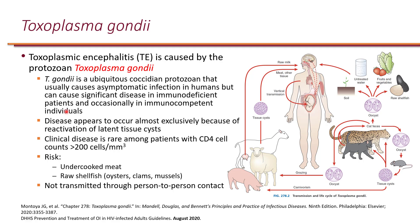Turning to Toxoplasma gondii: toxoplasmic encephalitis, or TE, is caused by Toxoplasma gondii, which is a protozoan parasite. In the life cycle of this parasite, cats are involved as well as livestock. Risk factors include undercooked meat, raw shellfish such as oysters and clams, exposed vegetables, untreated water, organic food, or growing your own food where cats or livestock are present — all of which can expose a patient to Toxoplasma gondii.